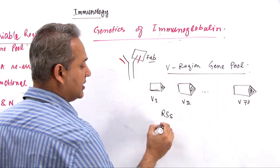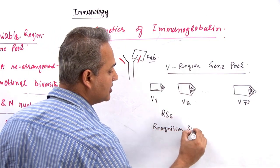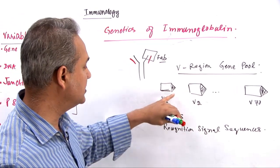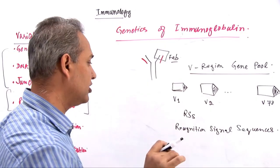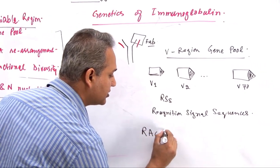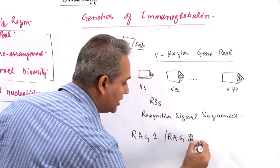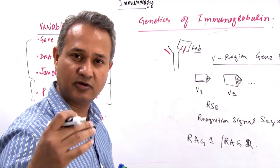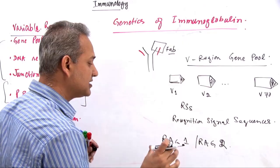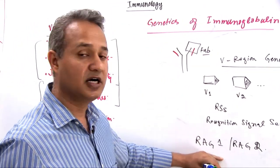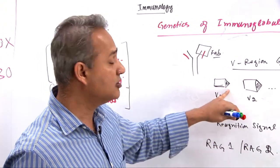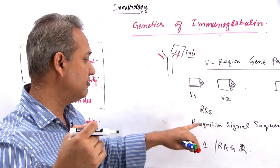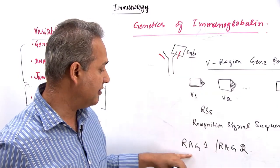RSS stands for Recombination Signal Sequences. These sequences attached to the genes are signals for the enzymes RAG1 and RAG2 — Recombination Activating Gene 1 and Recombination Activating Gene 2. These are large complex proteins of over 1000 amino acids. RAG1 and RAG2 attach to the RSS sequences — that is why the sequence is called a recognition signal sequence — nucleotide sequences that signal and are recognized by the RAG enzymes.